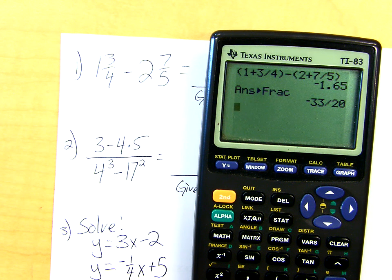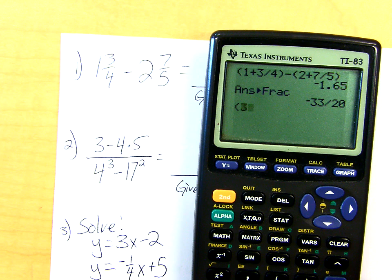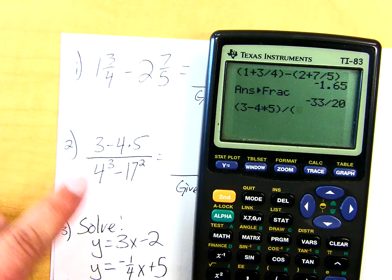Remember talking about typing this incorrectly. You want to put everything in the numerator in a parentheses and then everything in the denominator in a parentheses. So I open parentheses, 3 minus 4 times 5, close parentheses. Divided by, and then open your parentheses.